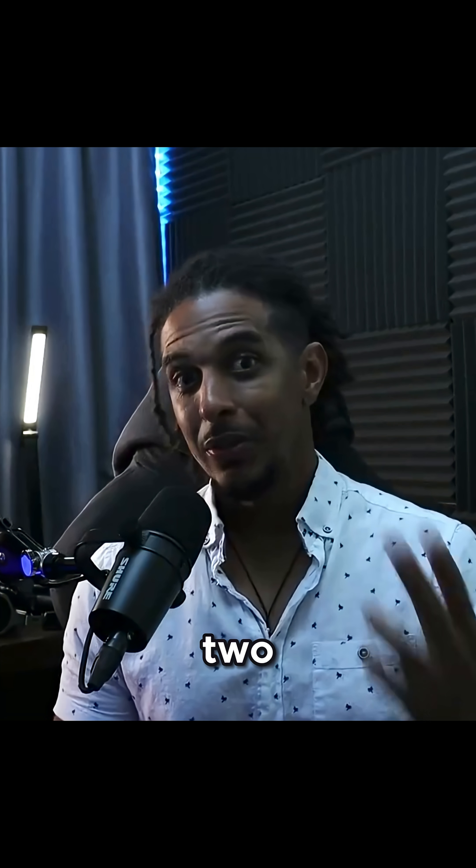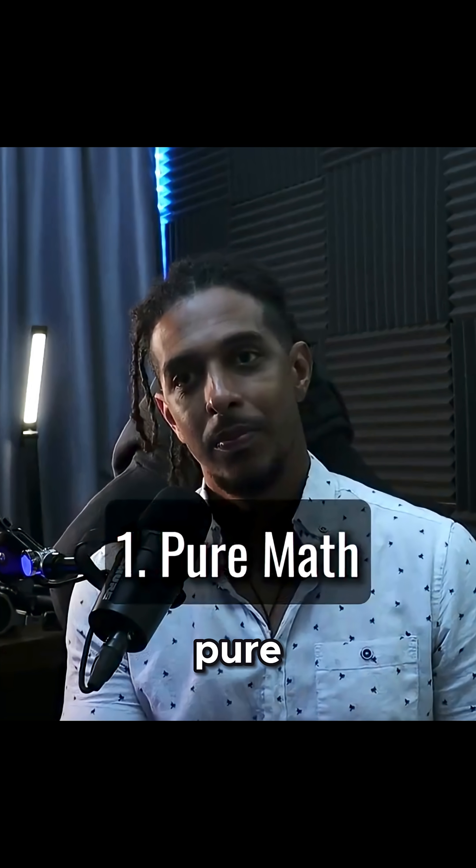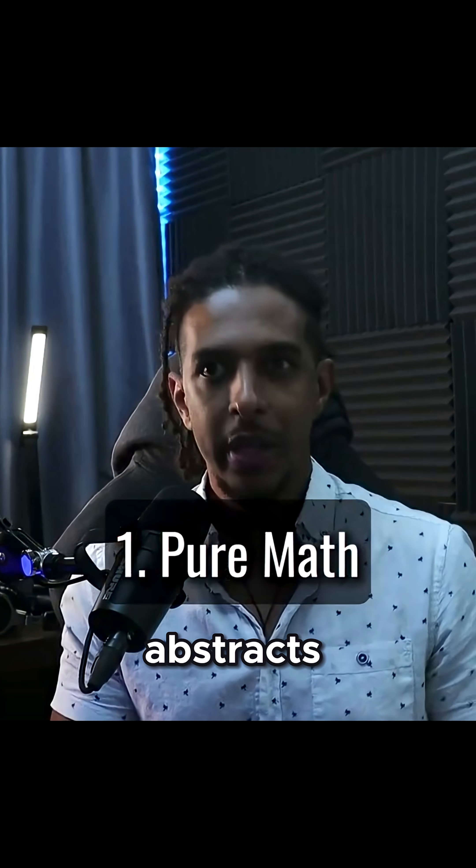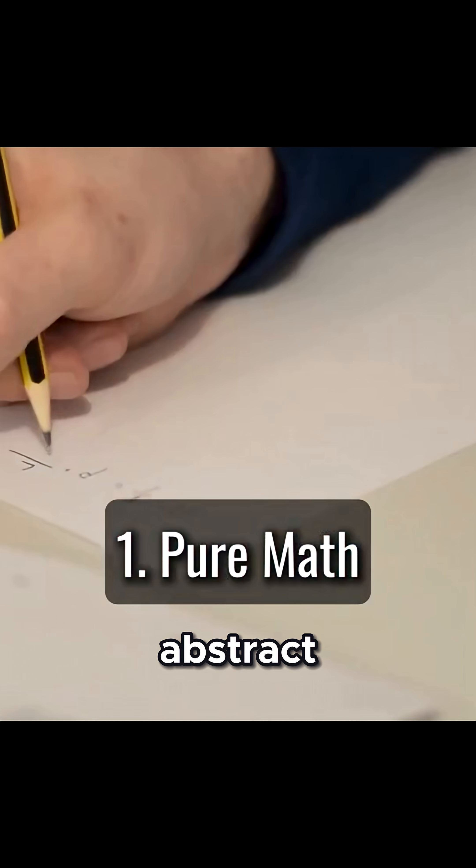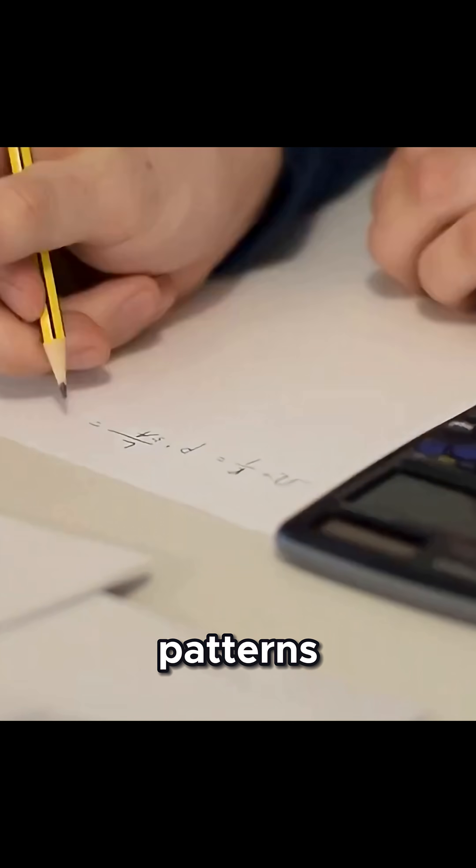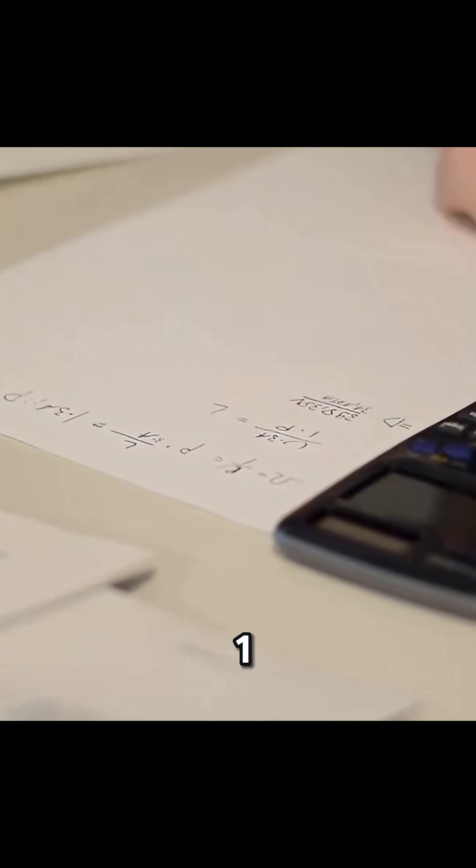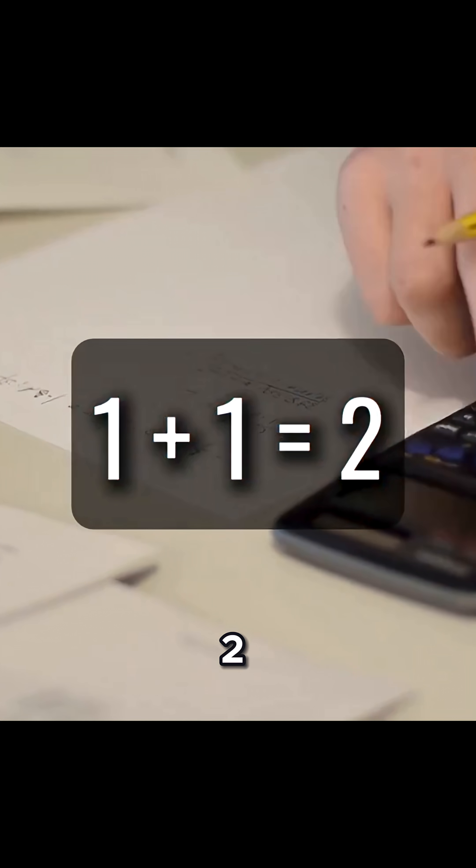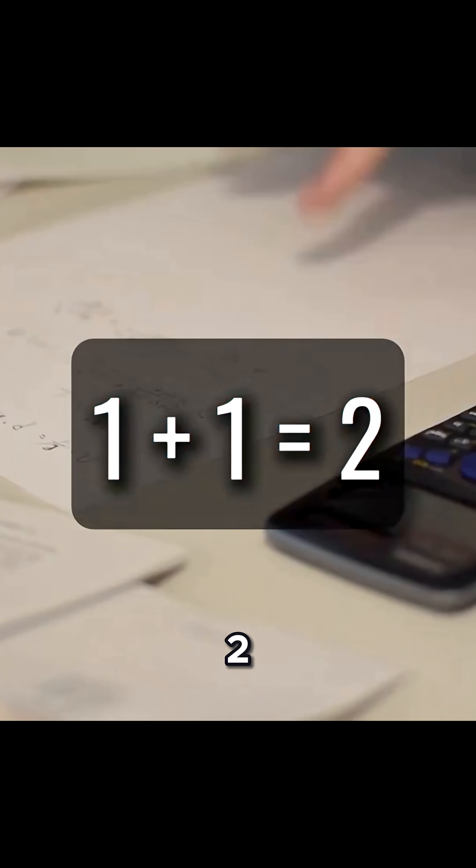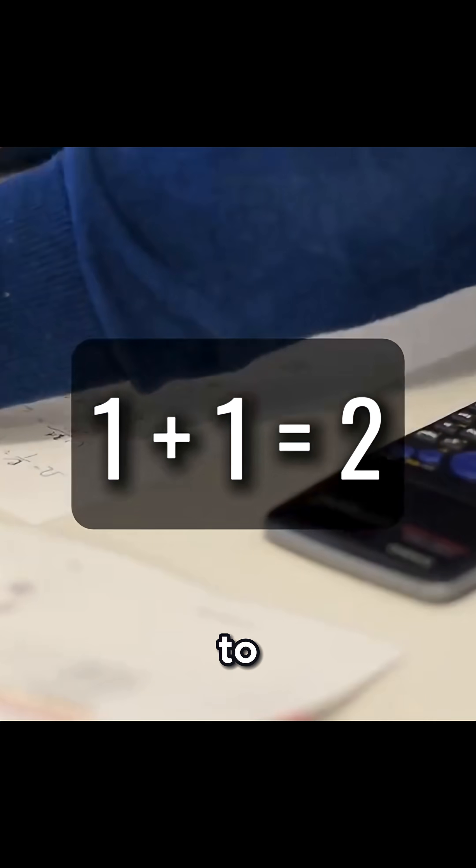Mathematics can be separated into two branches. The first is pure math or abstract math, which explores abstract concepts and complex patterns that shape our reality. One plus one equals two - adding the imaginary symbol one two times to come up with the imaginary symbol two.